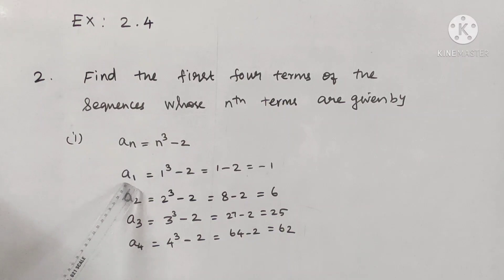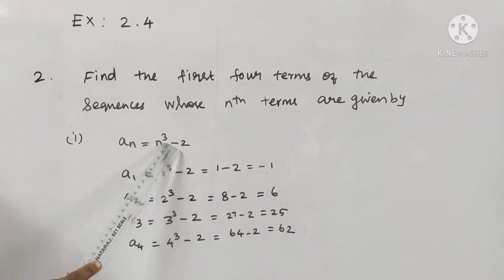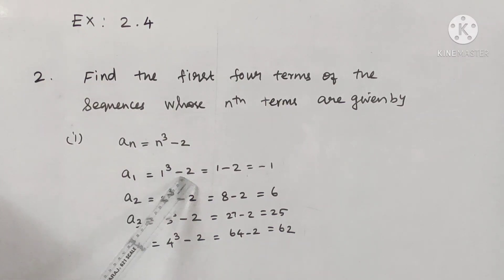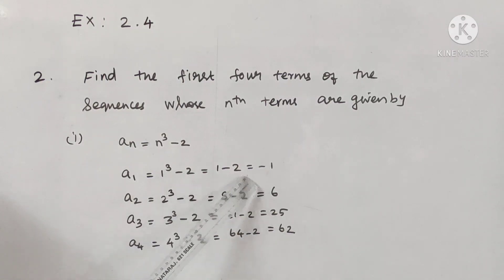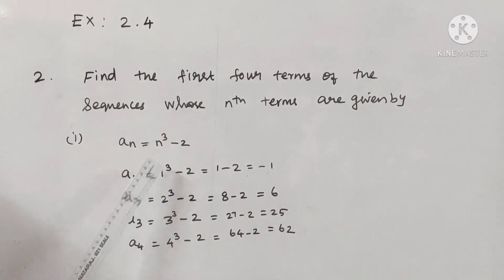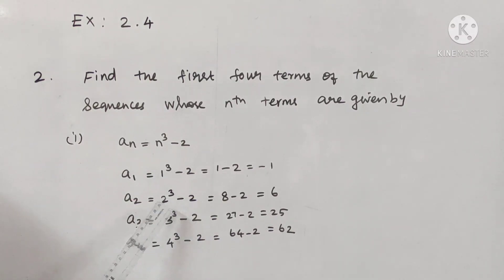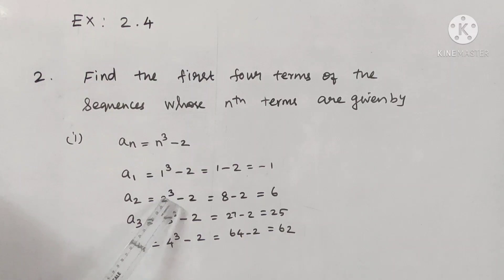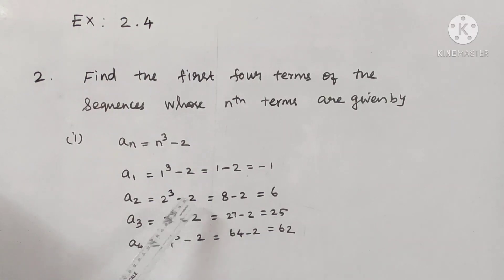So the first term a1 is n equal to 1: 1 cube minus 2. 1 cube is 1, and 1 minus 2 is minus 1. Next, a2 with n equal to 2: 2 cube minus 2. 2 cube is 8, and 8 minus 2 is 6.